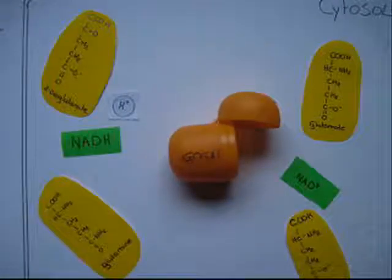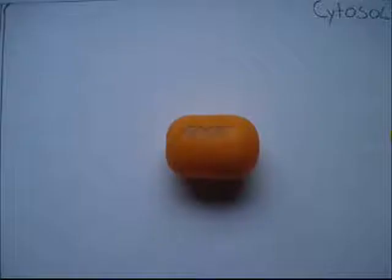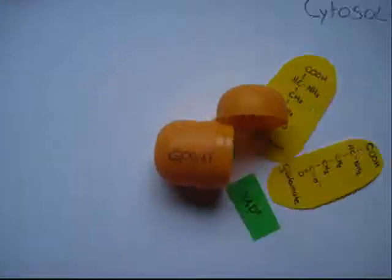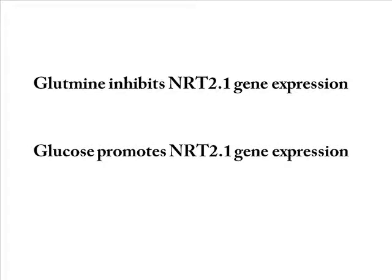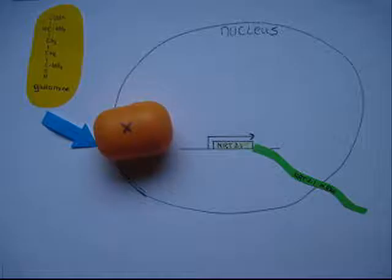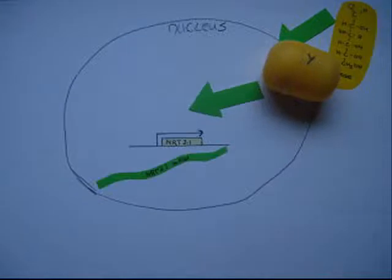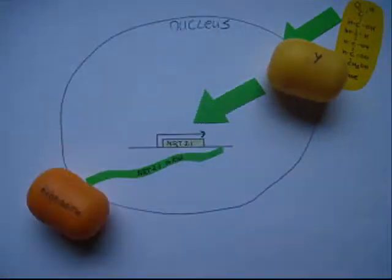Glutamine is also used as an amino donor for the biosynthesis of other amino acids. It has also been shown that glutamine inhibits NRT2.1 gene expression and thereby controls the high affinity nitrate uptake, although the exact mechanism of how this happens is not yet clear. In contrast, it has also been shown that glucose promotes NRT2.1 gene expression and nitrate uptake.